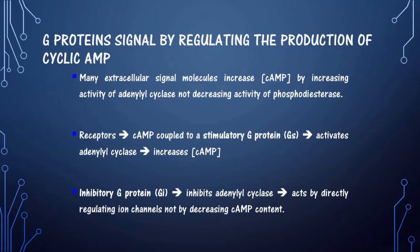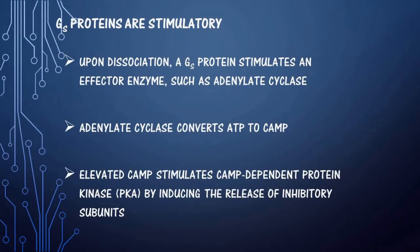The activation can involve a stimulatory G protein or an inhibitory G protein. If it is a stimulatory G protein, it activates adenylyl cyclase and increases cyclic AMP concentration. If it is an inhibitory G protein, it inhibits adenylyl cyclase and acts by directly regulating ion channels, not by decreasing cyclic AMP content. Stimulatory G proteins upon dissociation activate adenylyl cyclase, which converts ATP to cyclic AMP. Elevated cyclic AMP stimulates cyclic AMP-dependent protein kinase A, which is PKA.